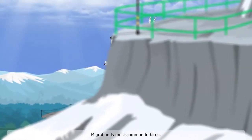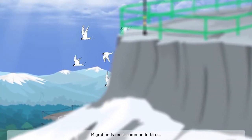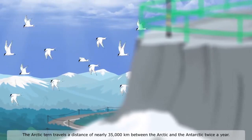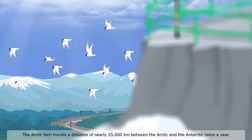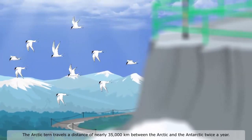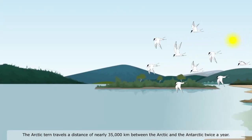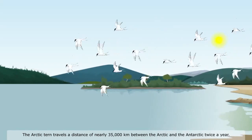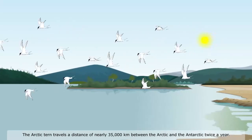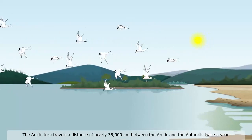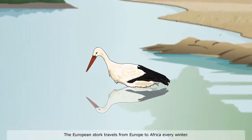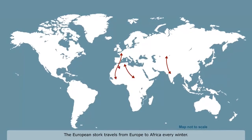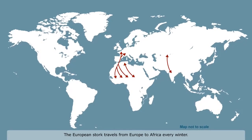Migration is most common in birds. The Arctic tern travels a distance of nearly 35,000 km between the Arctic and the Antarctic twice a year. The European stork travels from Europe to Africa every winter.